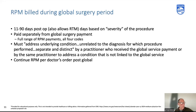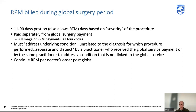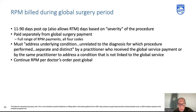Look at the fine print: the RPM must address an underlying condition unrelated to the diagnosis for which the procedure is performed, by a practitioner who received the global service payment or by the same practitioner addressing a condition not linked to the global service. The walking-around example: a patient going in for knee replacement, while also in RPM for diabetes management — unrelated to the surgical diagnosis. Parse that language carefully with your legal and coding teams.